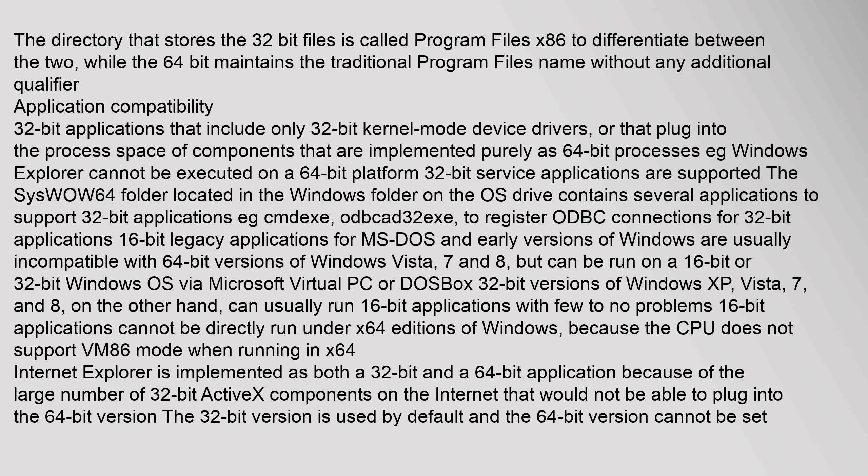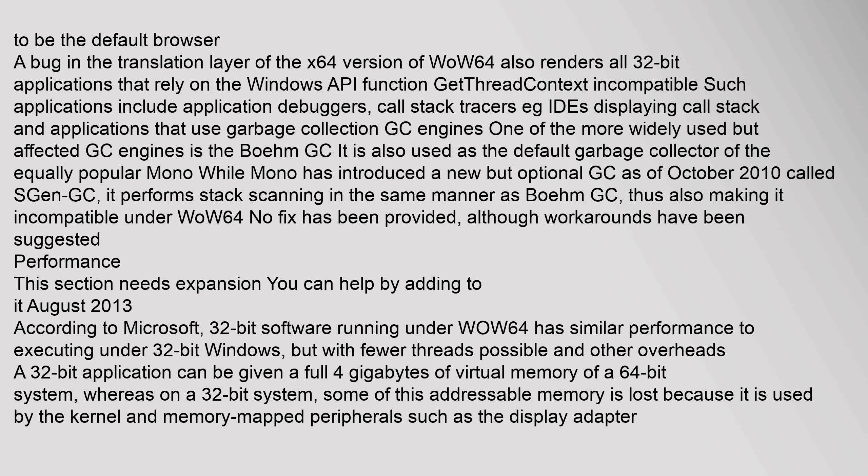16-bit applications cannot be directly run under x64 editions of Windows because the CPU does not support VM86 mode when running in x64. Internet Explorer is implemented as both a 32-bit and a 64-bit application; because of the large number of 32-bit ActiveX components on the internet, the 32-bit version is used by default and the 64-bit version cannot be set as the default browser. A bug in the translation layer of the x64 version of WOW64 also renders all 32-bit applications that rely on the Windows API function GetThreadContext incompatible, including application debuggers, call stack tracers, and applications that use garbage collection engines.